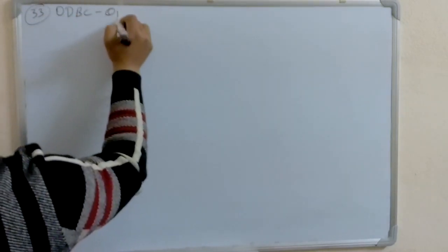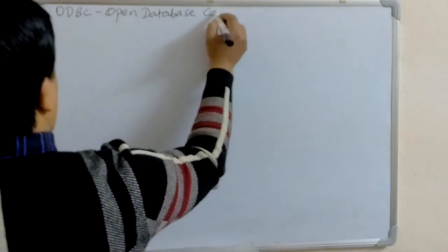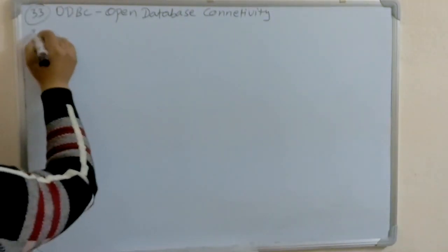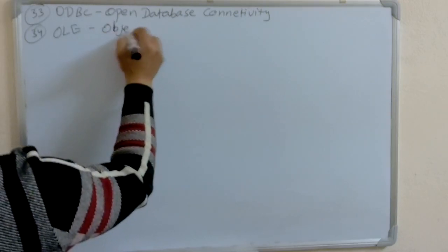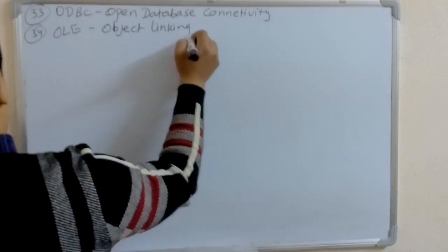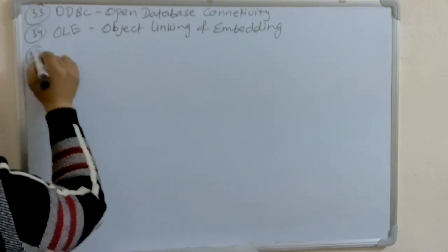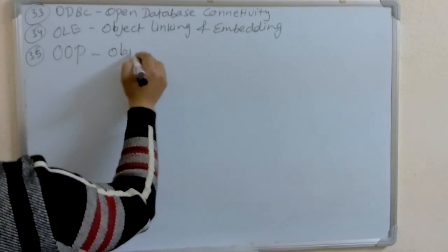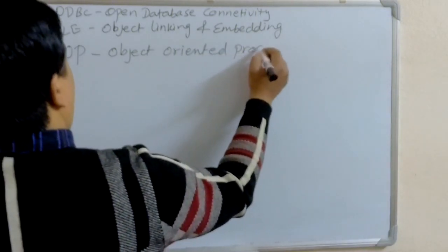ODBC: Open Database Connectivity. OLE: Object Linking and Embedding. OOP: Object Oriented Programming.